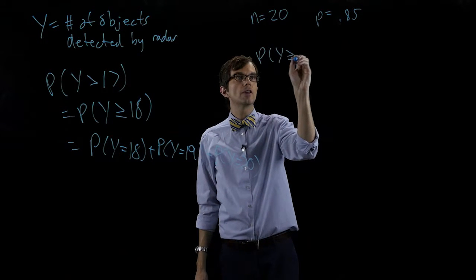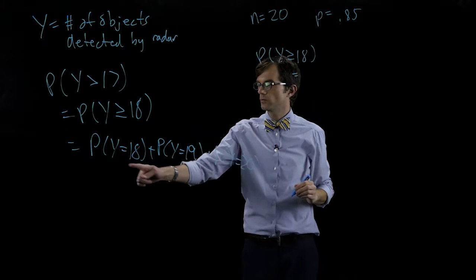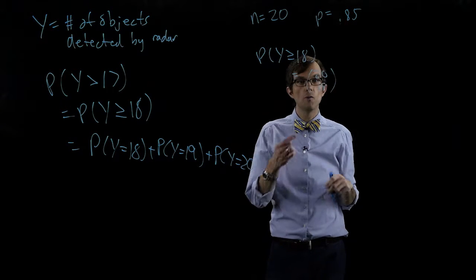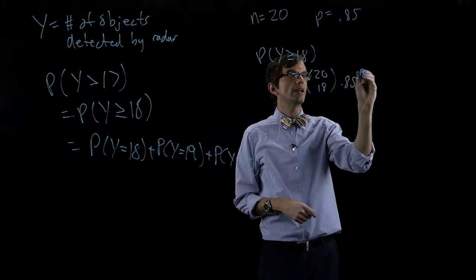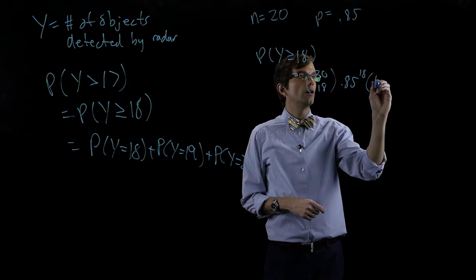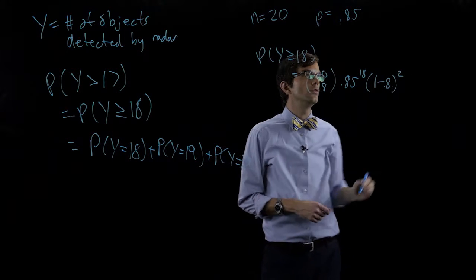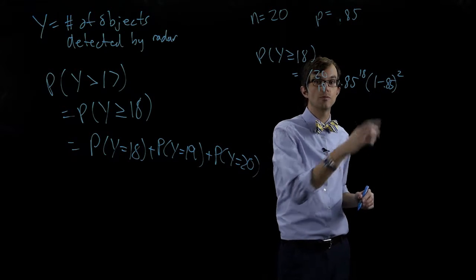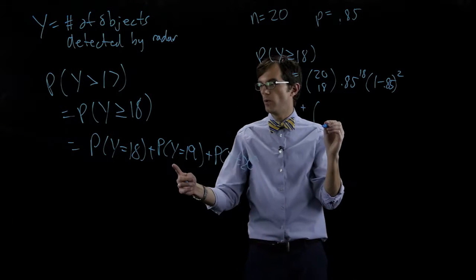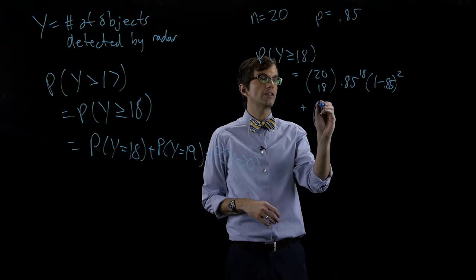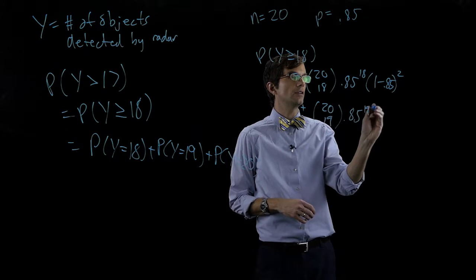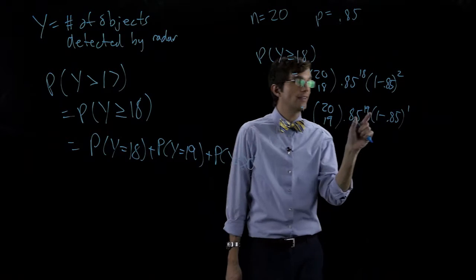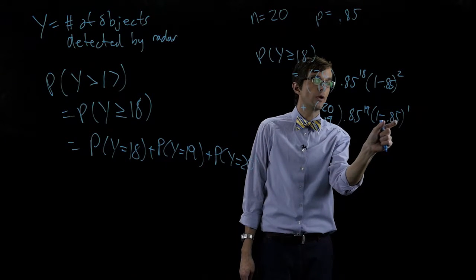The probability that Y is greater than or equal to eighteen: out of our twenty objects we're going to pick eighteen that are detected. The individual probability of detection is point eight-five, eighteen are detected, and twenty minus eighteen equals two that aren't detected — with probability one minus point eight-five. To that we add the probability that we see nineteen objects detected: twenty choose nineteen, times point eight-five to the nineteenth, times one minus point eight-five to the one. One object went undetected with probability point one-five.